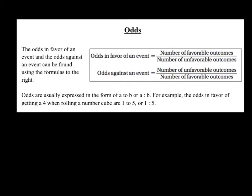So the odds in favor of an event are the number of favorable outcomes to the number of unfavorable. And then you can also write things as odds against, and it's actually just the reciprocal or the fraction flipped, and it's the number of unfavorable to the favorable.